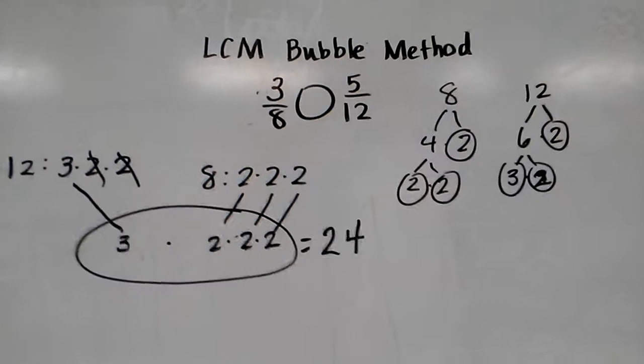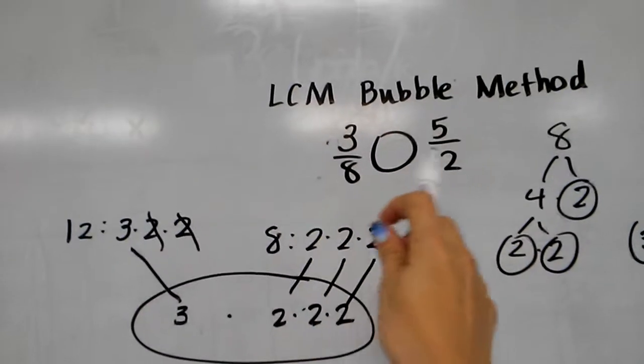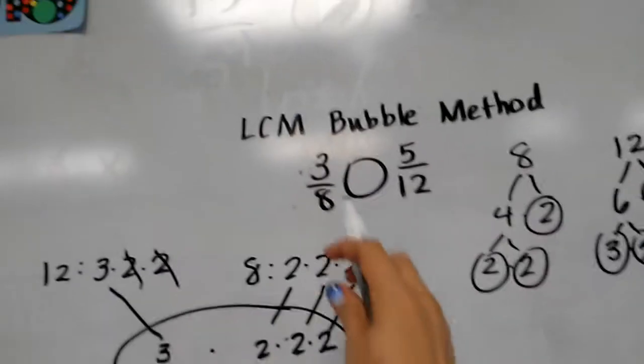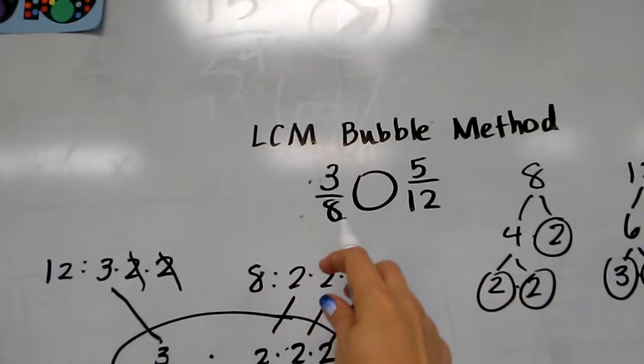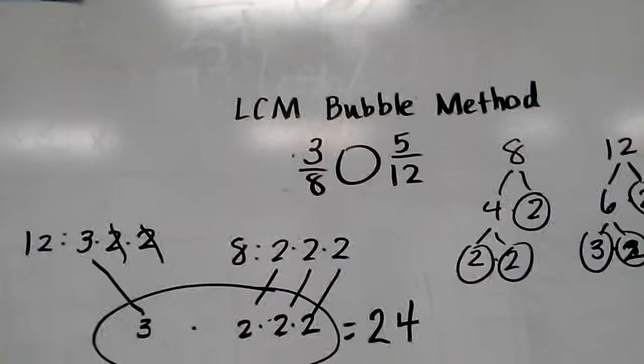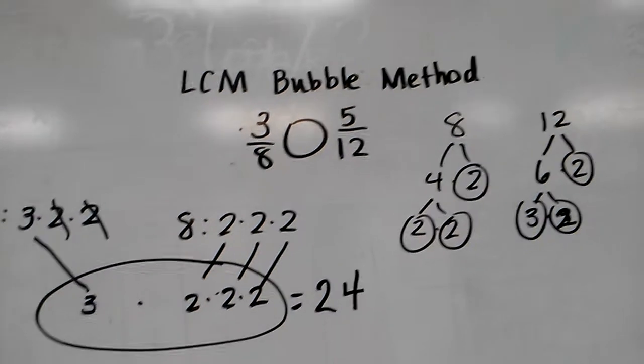So from here I've got my common denominator of 24. So now I need to find my equivalent fractions for 3/8 and 5/12 that have a common denominator of 24.